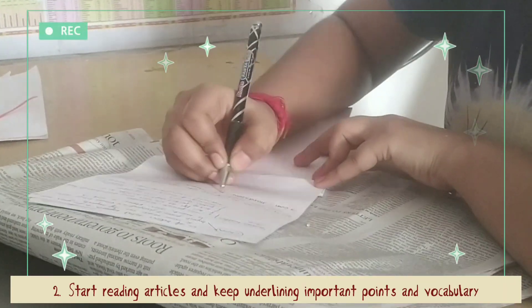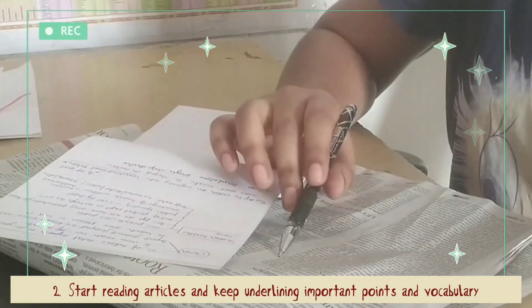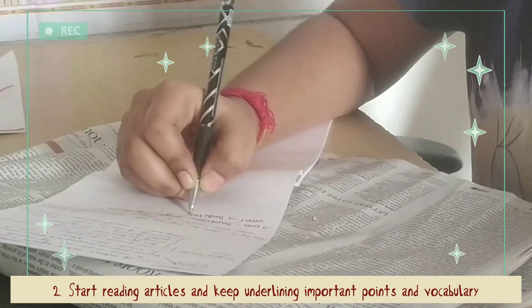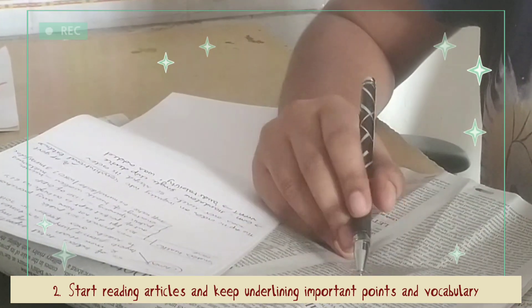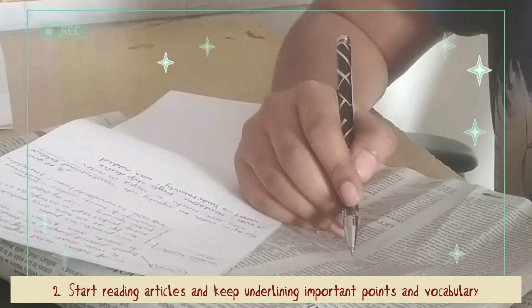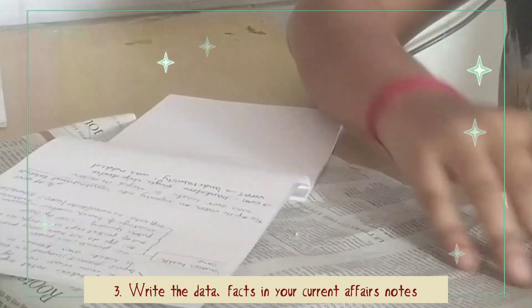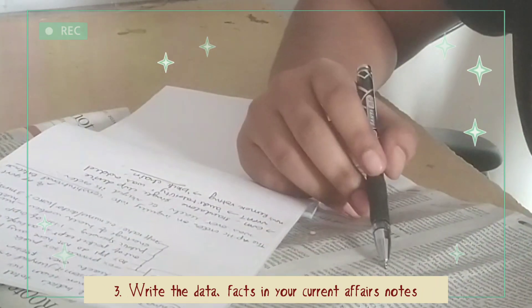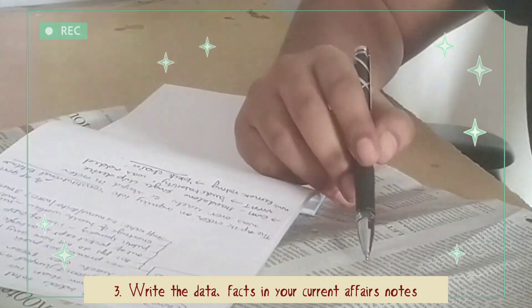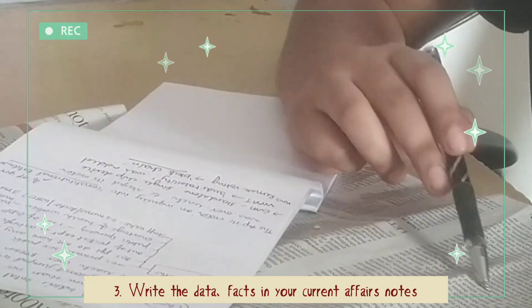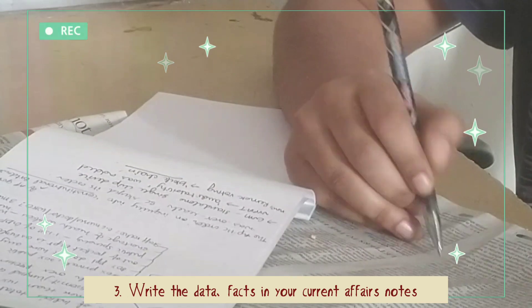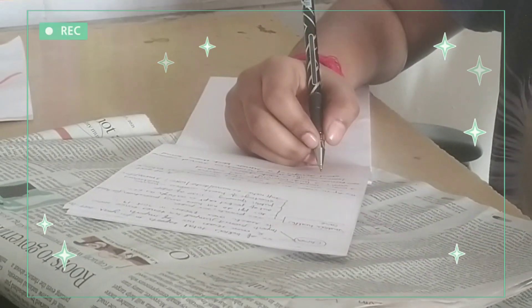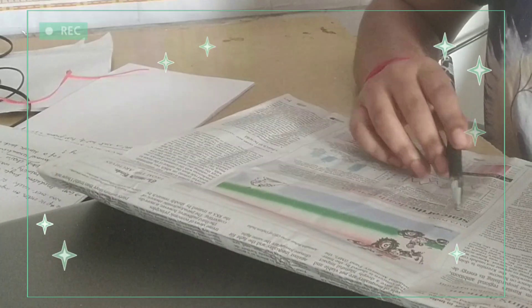And meanwhile you start noting down vocabulary and the important points, data, facts in your current affairs notes, or you can have a small notepad like this and you can note down in them. So I have separate notes for ethics as well as current affairs data and facts. So you can have separate ones or a single book which you can use for writing this facts and data.